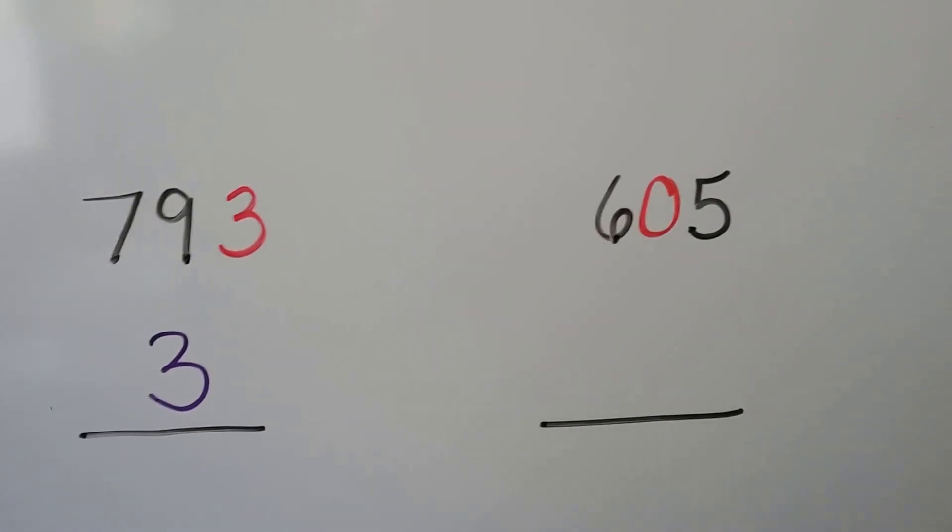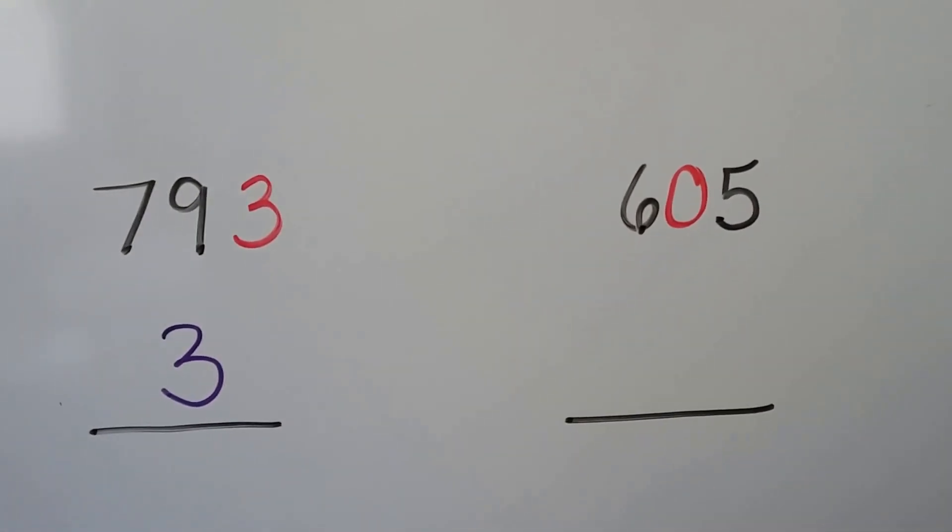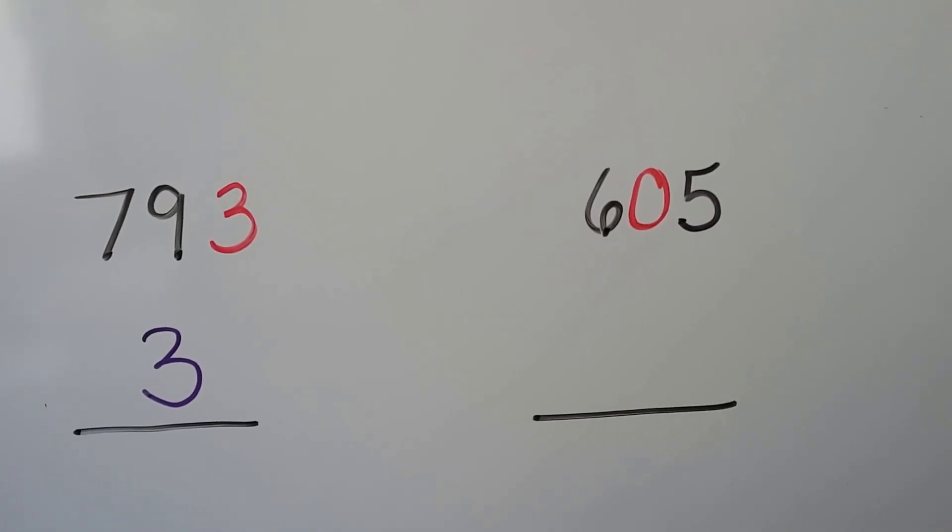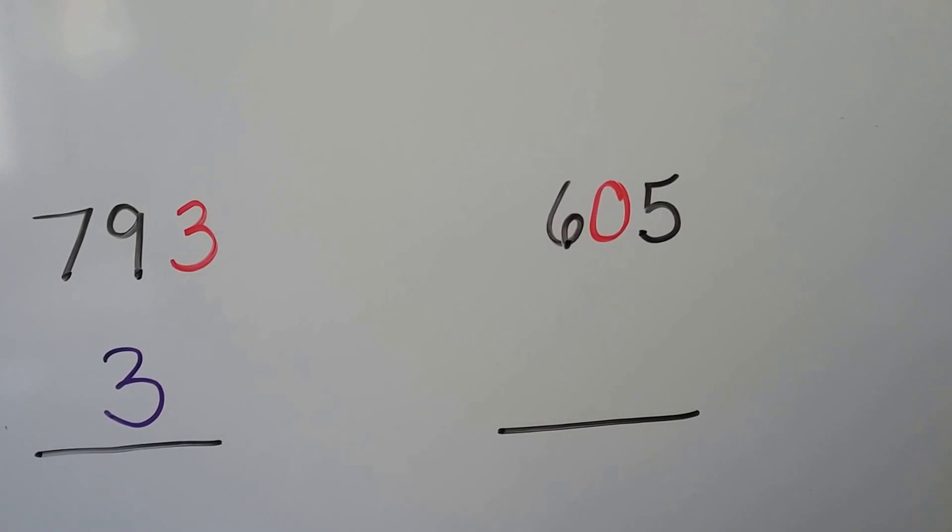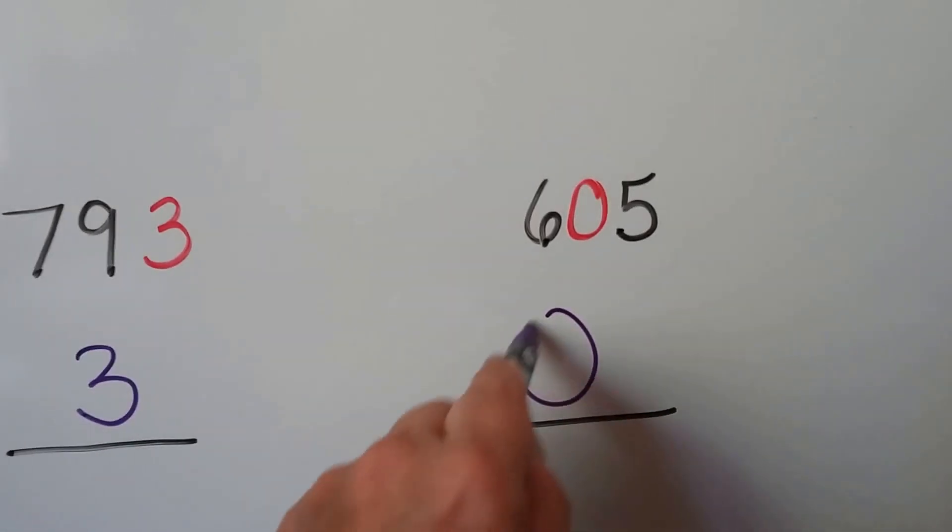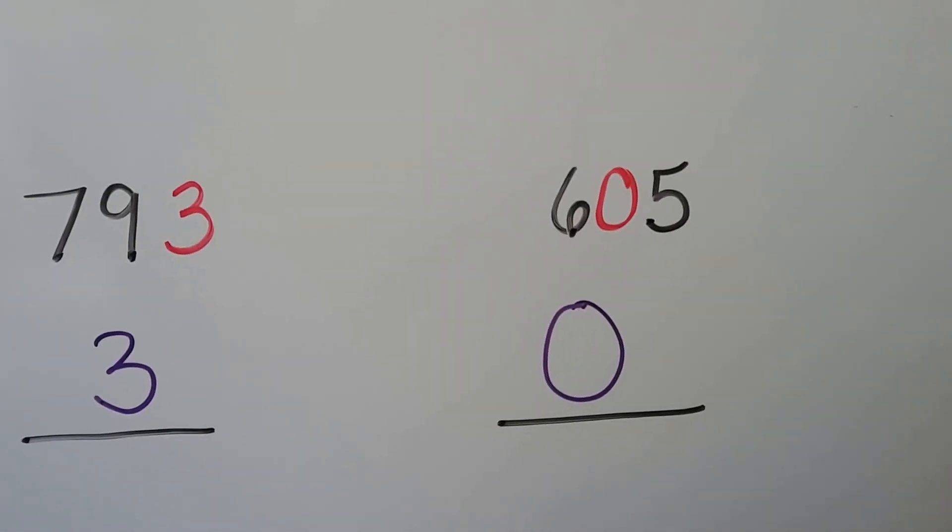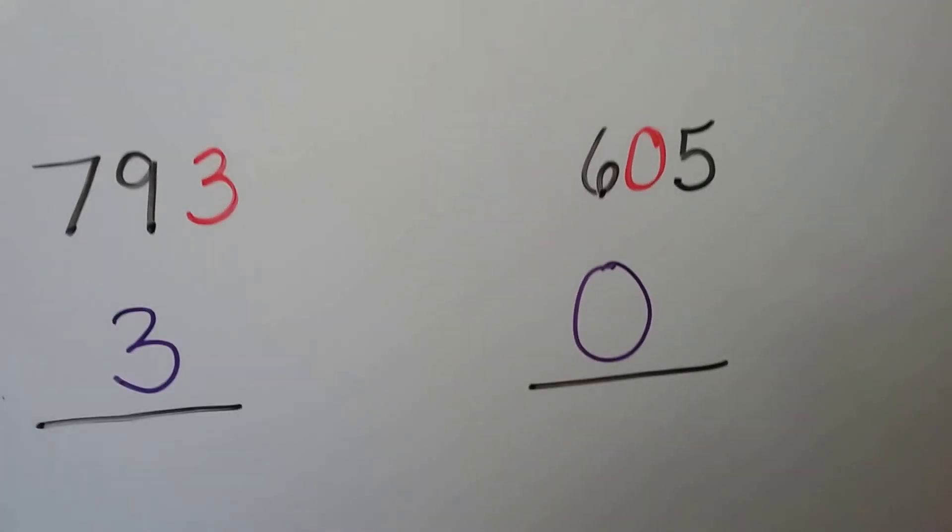And here's a tricky one. What's the value of that zero in the tens place? How many tens does it represent? None. Its value is zero. That was actually kind of easy, wasn't it?